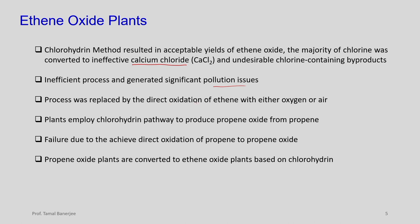This process was replaced by the direct oxidation of ethylene with either oxygen or air. The improvement is to directly oxidize ethylene to ethylene oxide. However, plants still employ the chlorohydrin pathway for propene oxide from propene, due to failure to achieve direct oxidation of propene to propene oxide. Propene oxide plants can be converted to ethylene oxide plants based on chlorohydrin with similar process flow sheets.